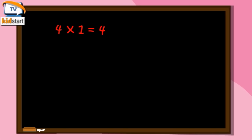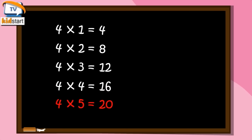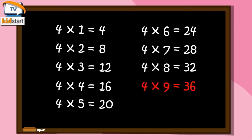Four ones are four. Four twos are eight. Four threes are twelve. Four fours are sixteen. Four fives are twenty. Four sixes are twenty-four. Four sevens are twenty-eight. Four eights are thirty-two. Four nines are thirty-six. Four tens are forty.